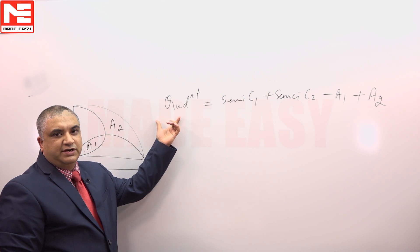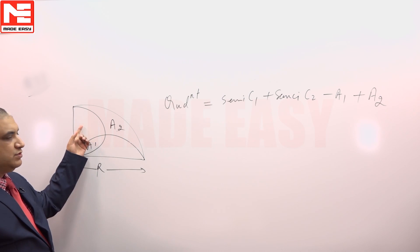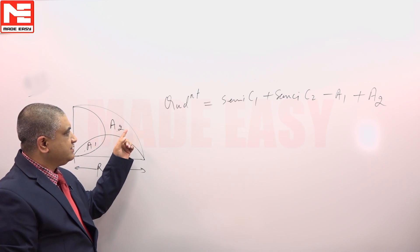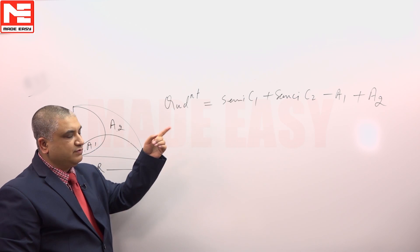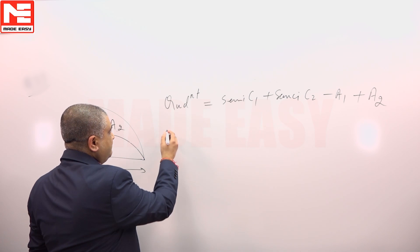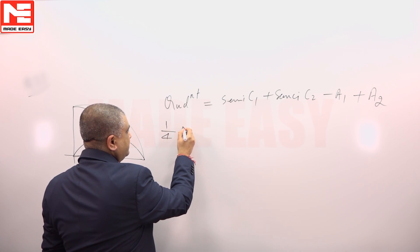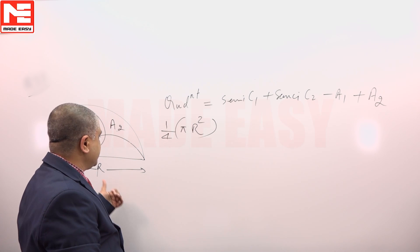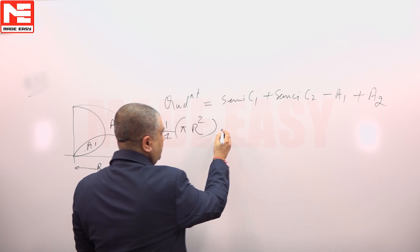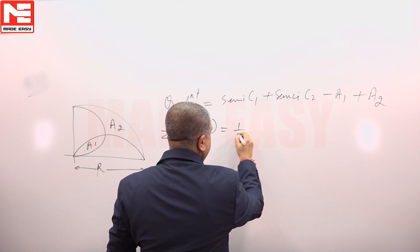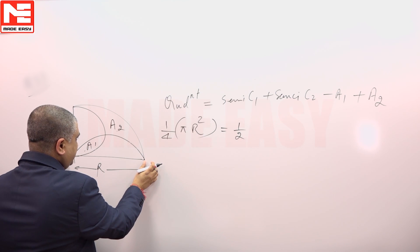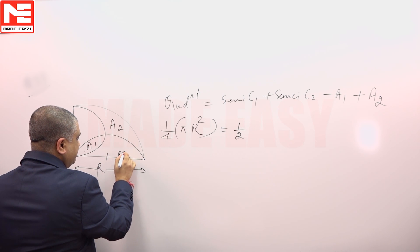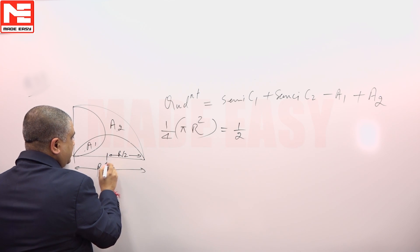Area of the quadrant equals the sum of the area of 2 semicircles, minus the area counted twice, plus the area not included. Area of the quadrant is (1/4)πr², where r is the radius of the circle. Area of the semicircle — the radius of the semicircle is r/2.